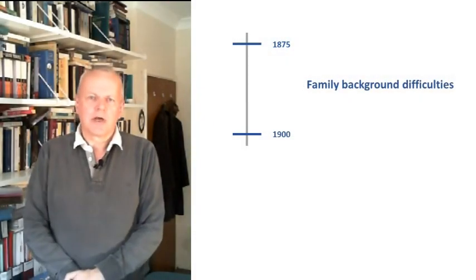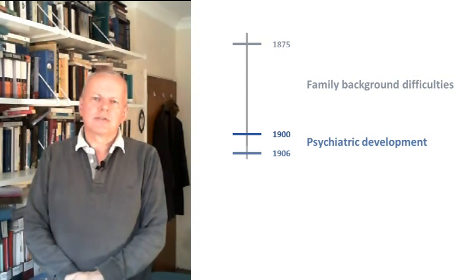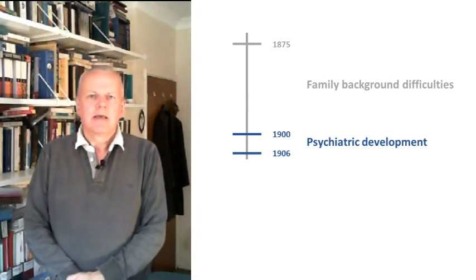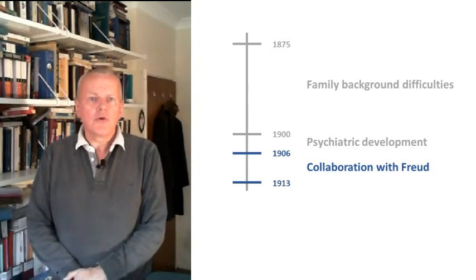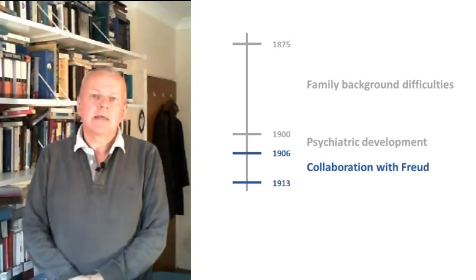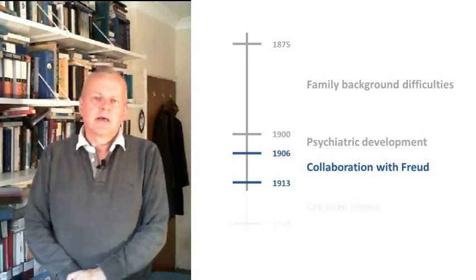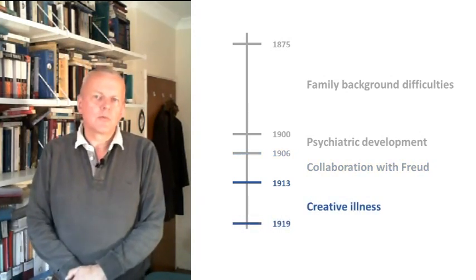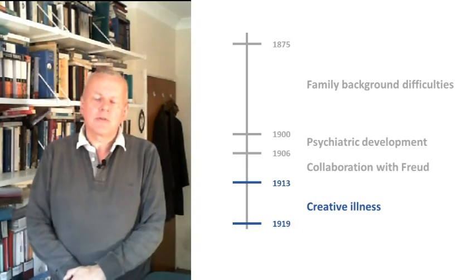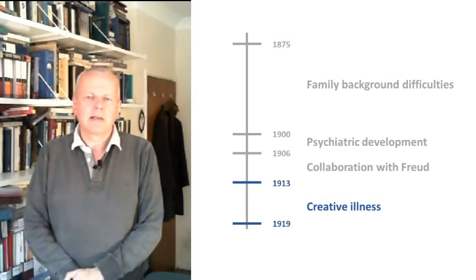Jung developed his theory of Psychological Types with a great deal of psychological conflict in the background. He was born in 1875 into a family that had some difficulties. He became a psychiatrist in 1900 at a leading psychiatric hospital and dealt with many patients who had been through a variety of traumas. Jung met Sigmund Freud in 1906, and for a few years they had a good relationship. However, from 1909 to 1913 their relationship gradually deteriorated and ended in acrimony. Jung started developing his theory of typology around the time of the First World War, during which he also experienced his own psychological problems, which he used creatively to develop his theory, which he called Analytical Psychology.